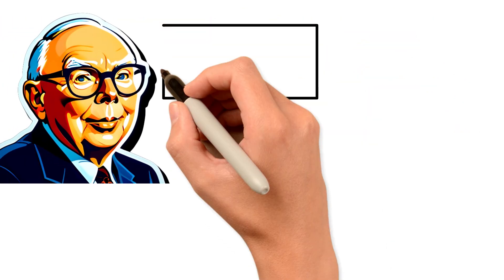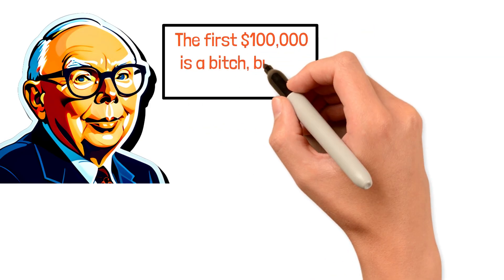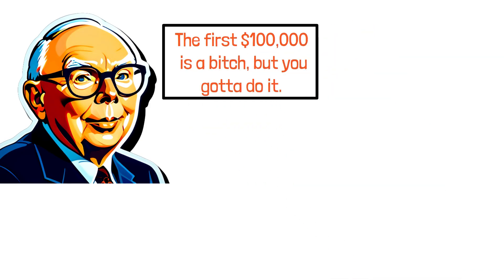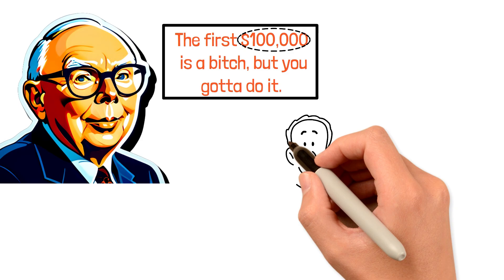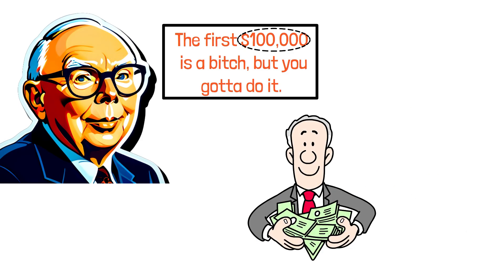Charlie Munger famously said that the first $100,000 is a bitch, but you gotta do it. He understood that first $100,000 is the hardest money you'll ever accumulate, but it's also the most important. Here's why.